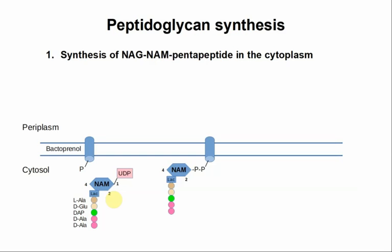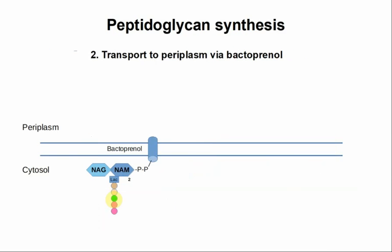This intermediate is also called Lipid 1 in the synthesis of peptidoglycan. Then the next thing that happens is that N-acetylglucosamine gets stuck on the other end of the NAM molecule. This is our repeating subunit of peptidoglycan - NAG, NAM, pentapeptide - all attached to bactoprenol diphosphate or pyrophosphate. This is also called Lipid 2 in the biosynthetic pathway.